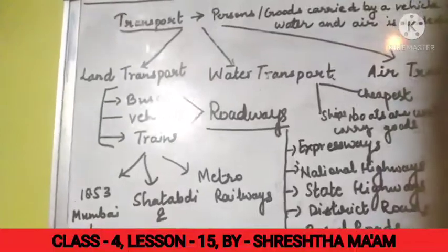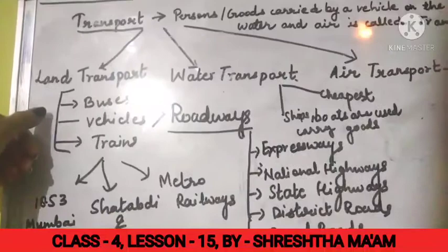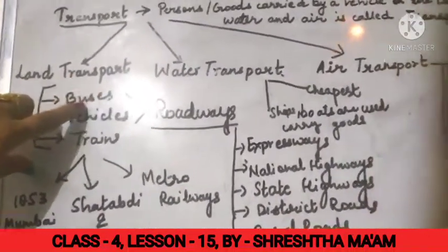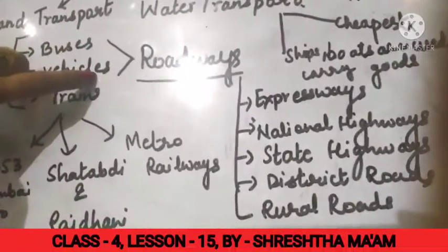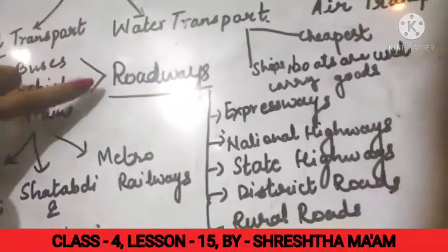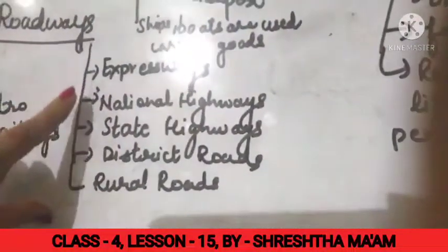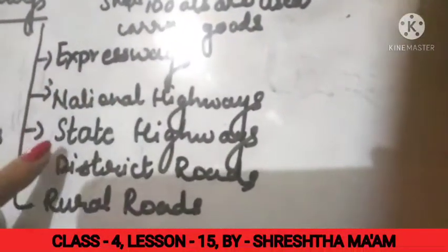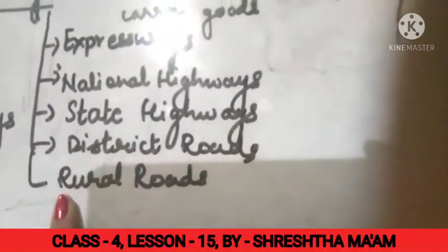In land transport, the things which help us travel on land from one place to another include buses, vehicles, and trains. Buses and vehicles — including cars, bikes, etc. — make up roadways. Roadways are divided into five parts: expressways, national highways, state highways, district roads, and rural roads.